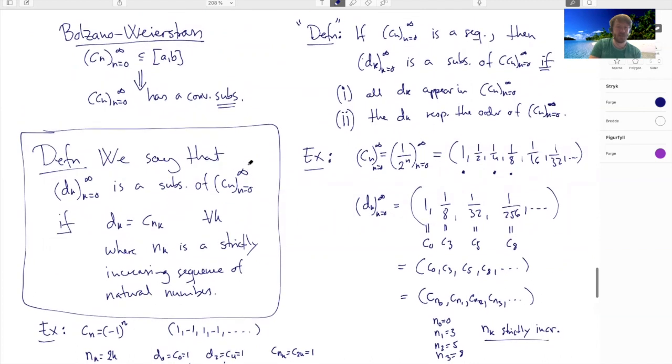We can look at more examples. Where do we care about closed bounded interval here? In the statement we have, actually closed is not so important. What we get from closed is that this has a convergent sequence with limit in AB. The closed guarantees us that the limit stays inside.